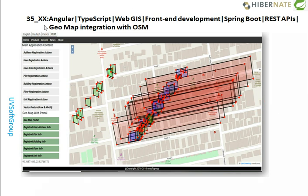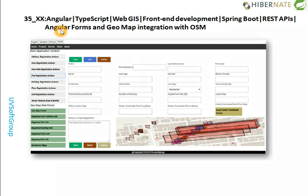Just follow my previous screencast number 35 for a detailed discussion on how I started this development — including internationalization, localization, integrating libraries, building geometries into maps, building forms, and validation. The background for this application: it was planned as a city government application that needs to maintain building information, plot information, floor information, and unit information, all with geo functionalities.